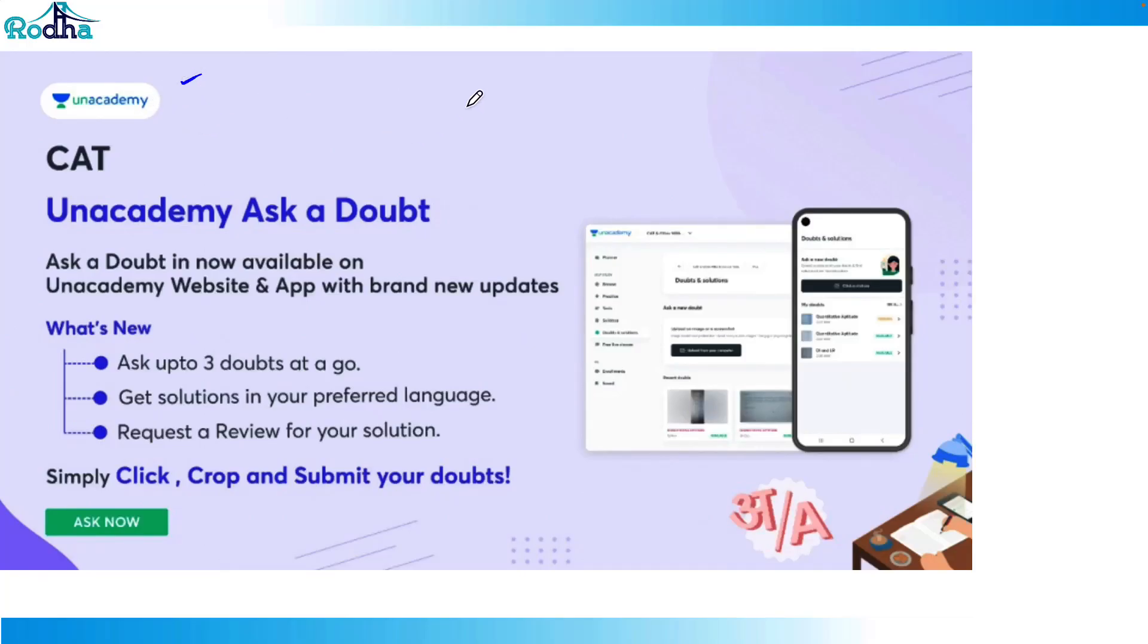Hi everyone, so this is Unacademy Ask a Doubt feature and this is absolutely free for everyone. You can just download the Unacademy app, it is available on the website and app. In this you can click any picture, crop the question part, and submit, and within four to six hours you get the solutions. That is mostly in video form. You can ask up to three doubts at a go till it is clear and again you can post three doubts. You can also get solution in English or Hindi depending on your preferred language. This feature is available on your website and your app, it is absolutely free of course for everyone. So just go to Unacademy, you can post any doubt and you get a video solution by top faculties. Thank you.